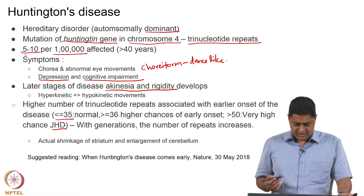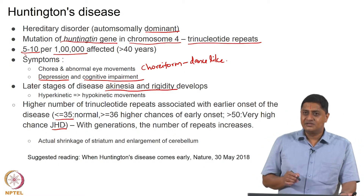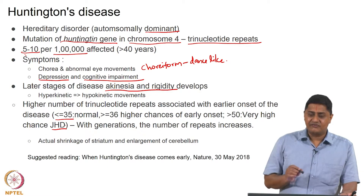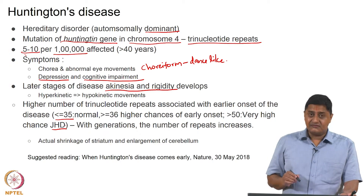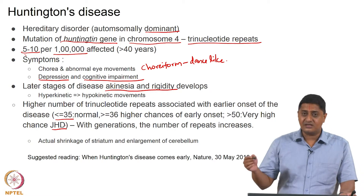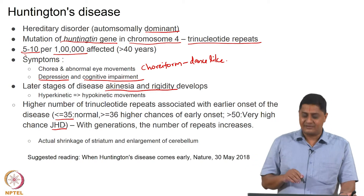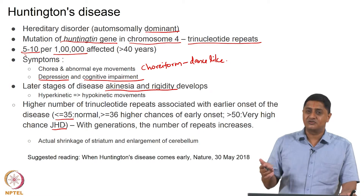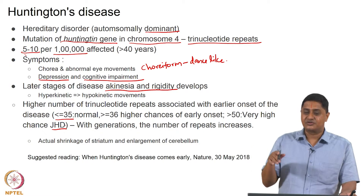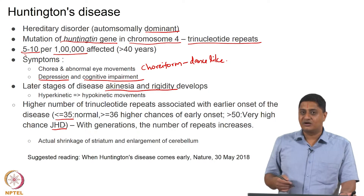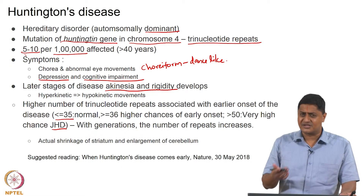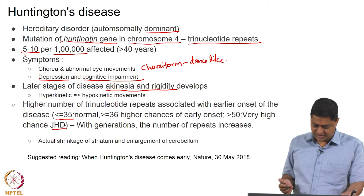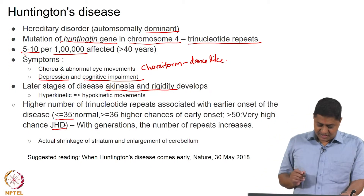This very early onset is very different from the original description made by Huntington in his paper. It turns out that as generations progress, the onset happens earlier. If in one generation the onset happens at 40 years, in the next generation the number of trinucleotide repeats increases, so the child may get the disease at around 35 or 38, depending on the number of repeats.